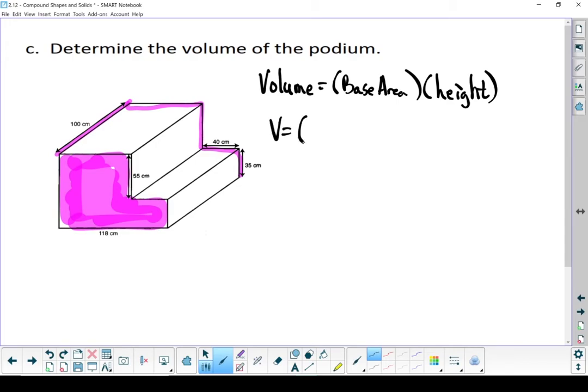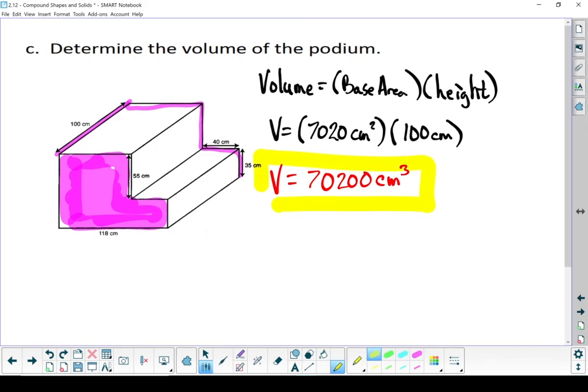Now according to the earlier question, we found that particular area to be 7020 square centimeters. Be careful you don't use the area where you times the two faces together. We're only looking for one of those faces. And we're going to multiply that by 100 centimeters. Multiply those together. My volume ends up being 70,200 centimeters cubed. There is the volume of our podium.